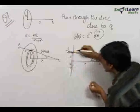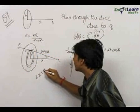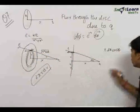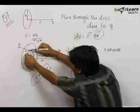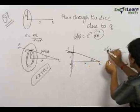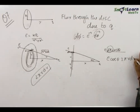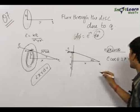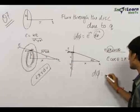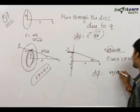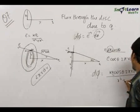The dot product gives dφ = E·dA·cosθ — this is the small amount of flux through a part of the ring. The area of the full ring is 2πr·dr. Integrating over the whole ring, every part gives the same E·dA·cosθ, so we get: dφ = kq·cosθ·2πr·dr / (r² + x²).